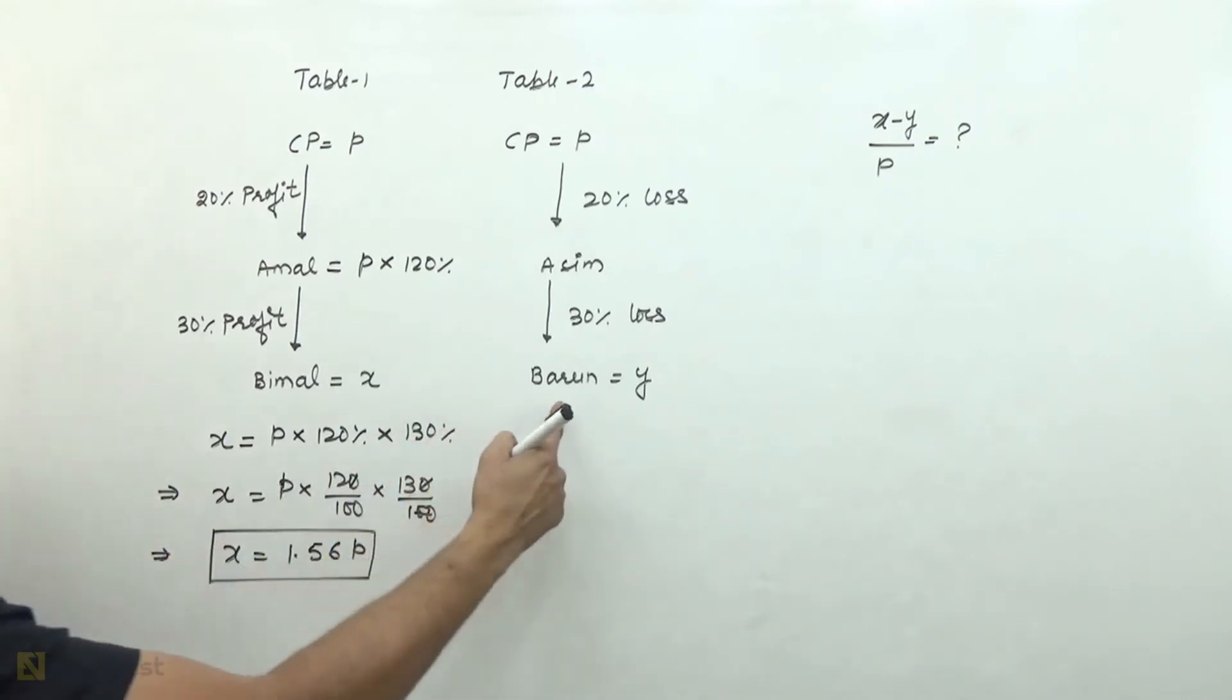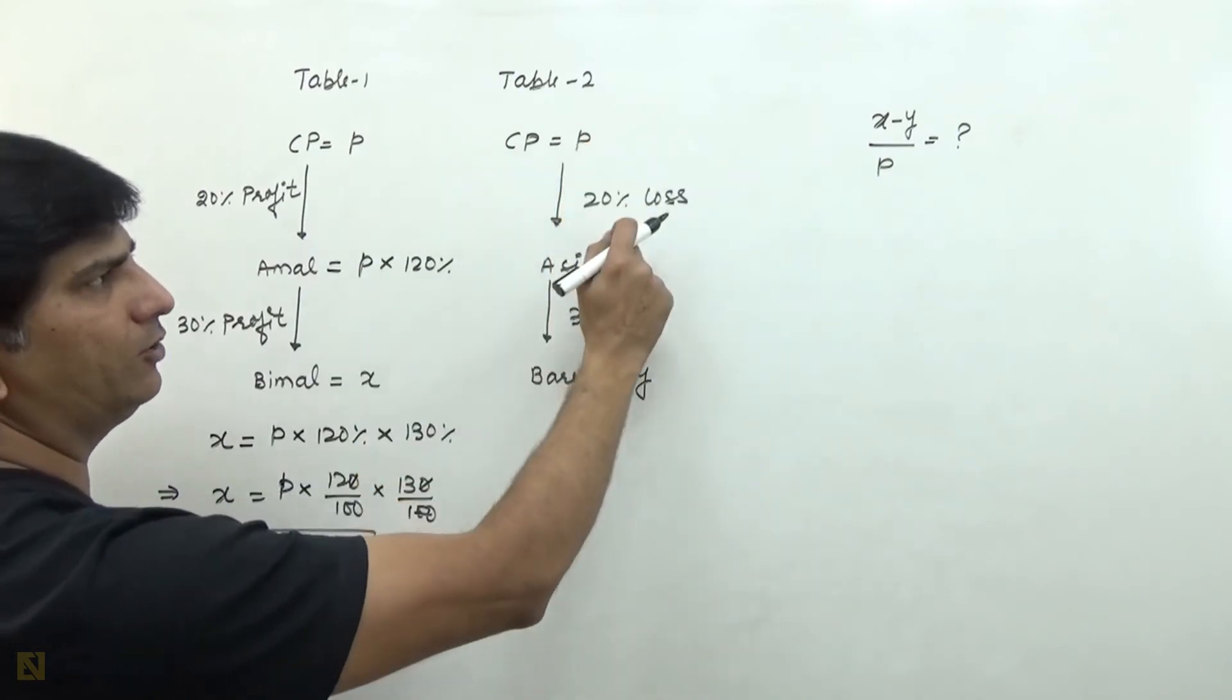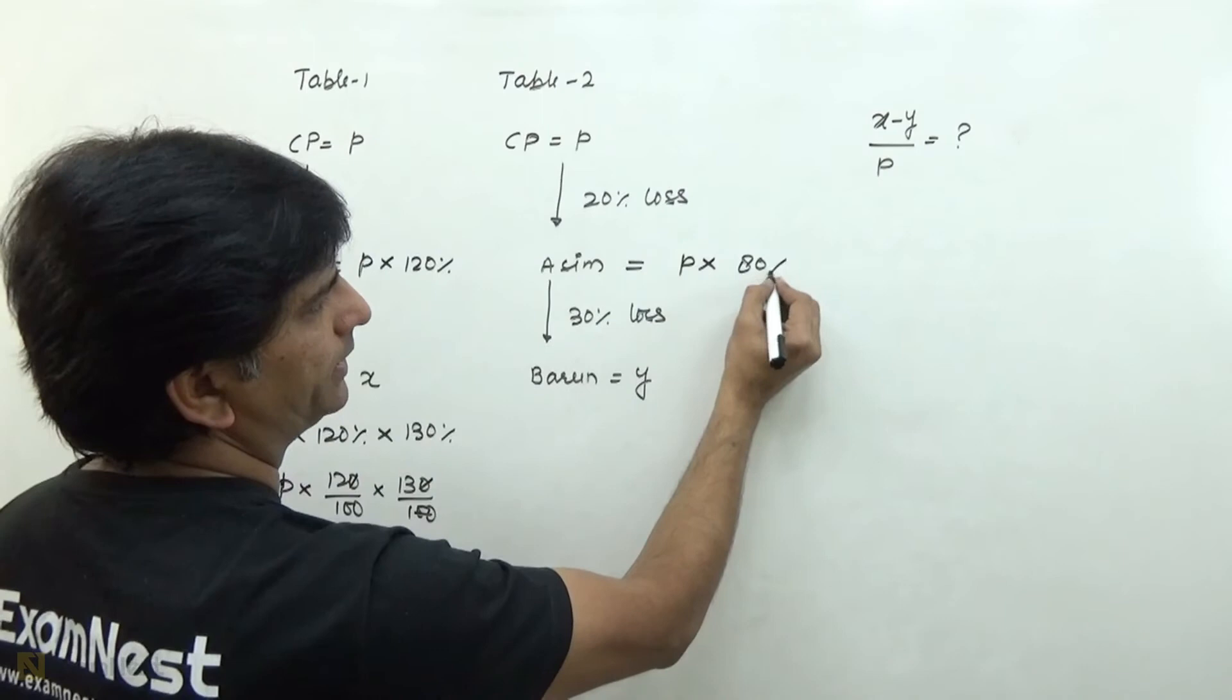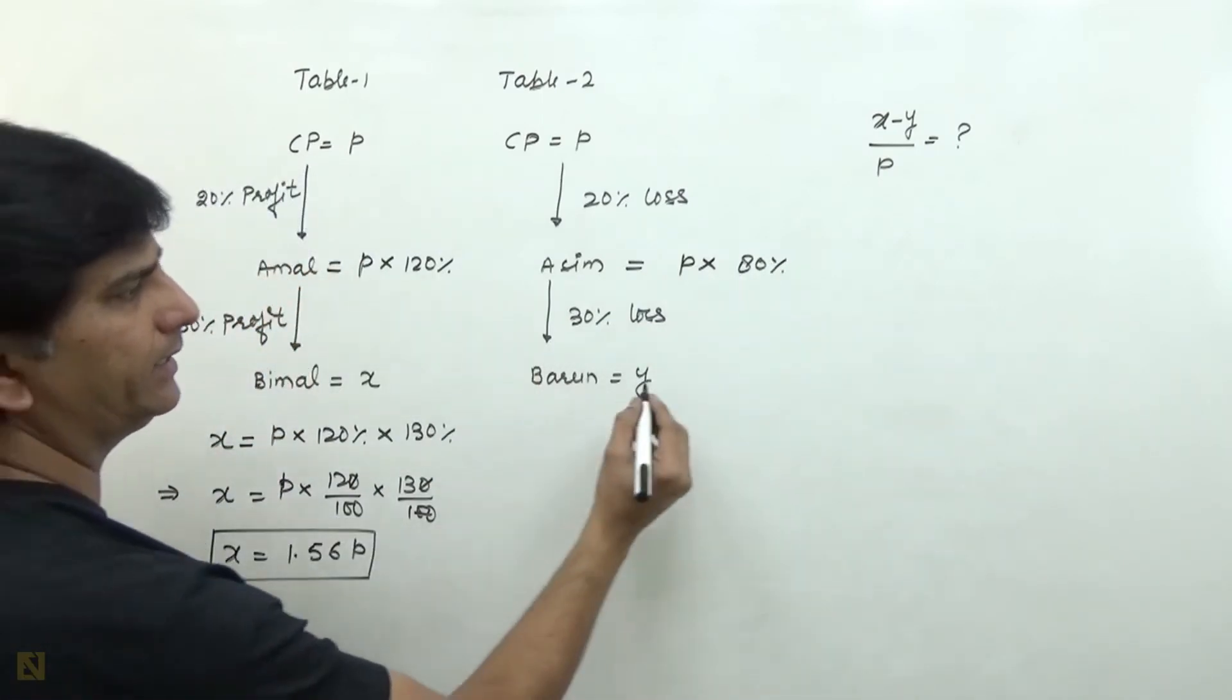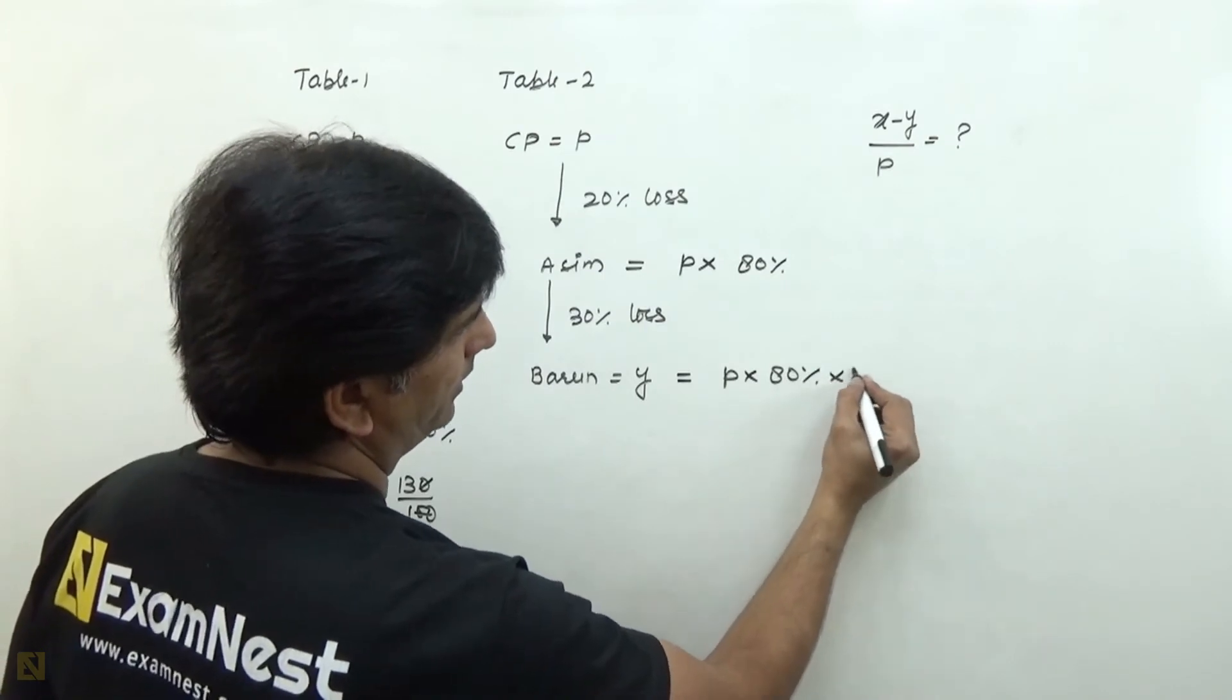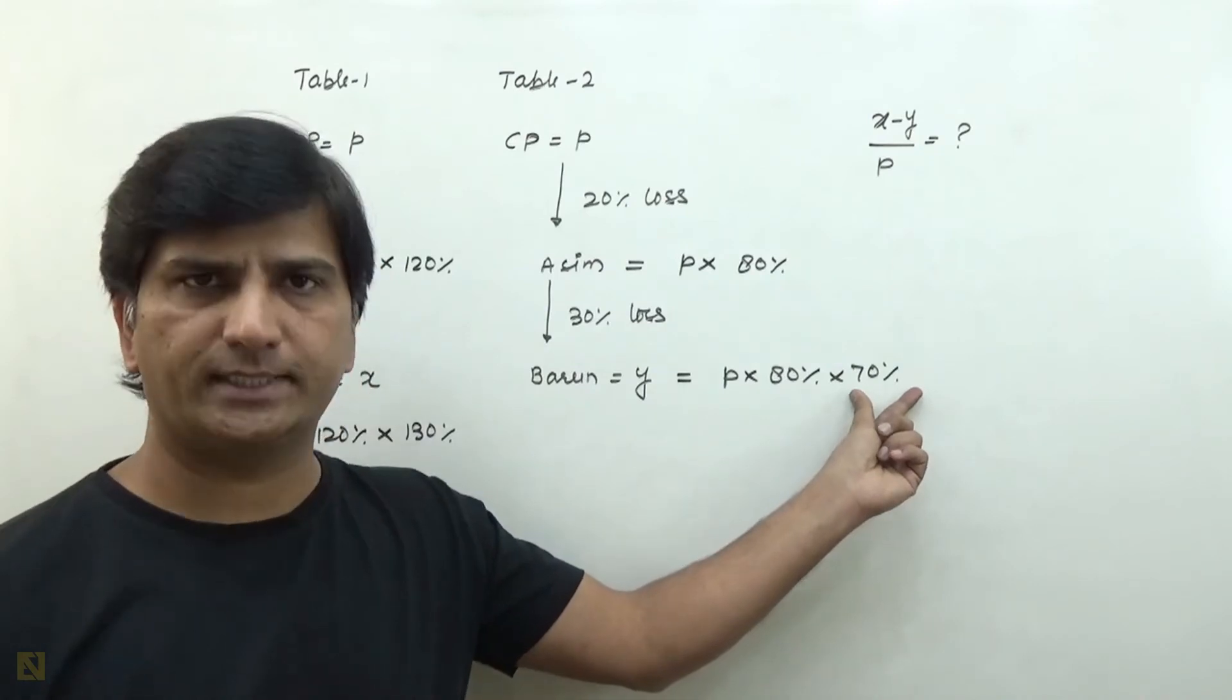Looking at the second table, Aseem buys this table at 20% loss, so P into 80%. Similarly, Barun pays P into 80% into 70%, since Aseem sells at 30% less.